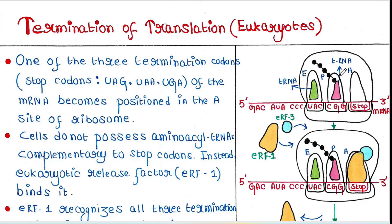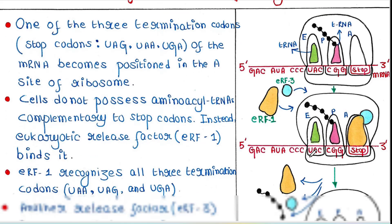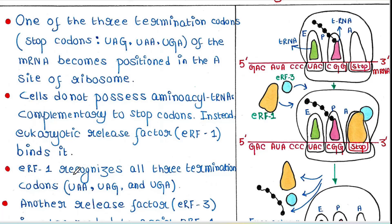The P site contains the tRNA which carries the polypeptide chain, and the E site contains the empty tRNA which does not have any amino acid. Cells do not possess aminoacyl-tRNA complementary to stop codons. Instead, eukaryotic release factor eRF1 binds the stop codon. eRF1 recognizes all three termination codons: UAA, UAG, and UGA.